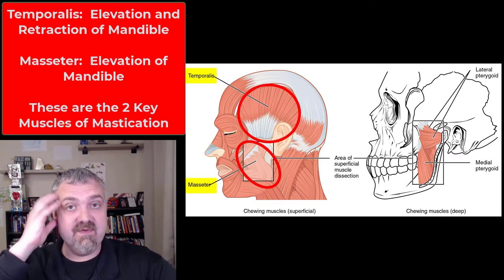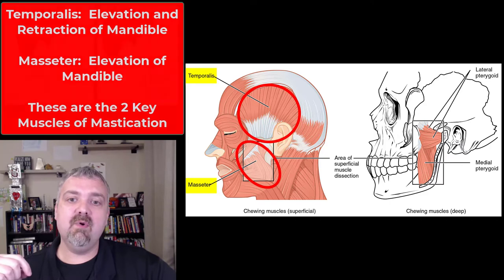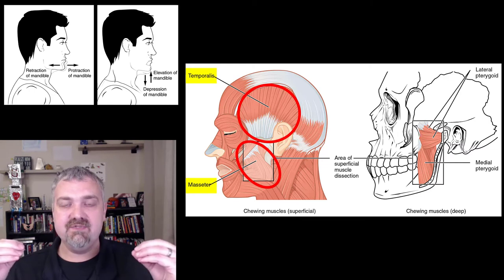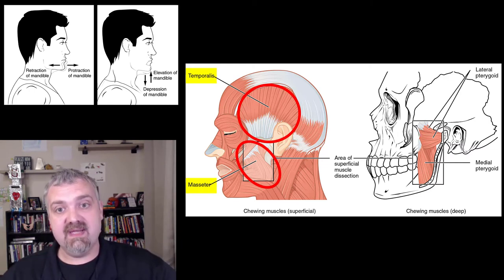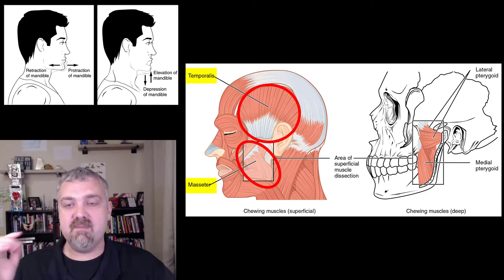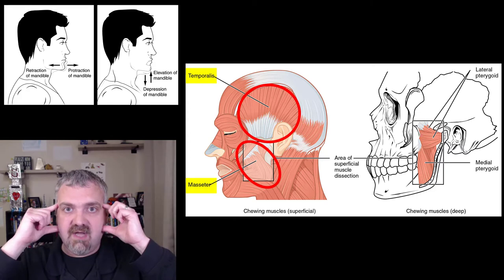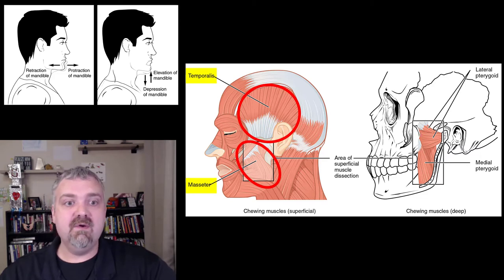The temporalis muscle, as you can see here, sits over the temporal bone, and the masseter muscle connects the upper and lower jaw — the maxilla and mandible. They're both going to be involved in elevating the mandible. They play a big role in chewing, closing your mouth when you're chewing. Opening your mouth is primarily just gravity, so relaxation of these muscles will open your mouth. If you want to feel them, put your fingers on your temples and your thumbs to your upper and lower jaw and just clench your teeth — you feel the temporalis and masseter muscles pop out. That's a good way to get a feel for what they do and when they do it.